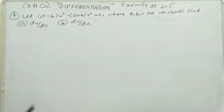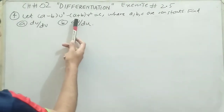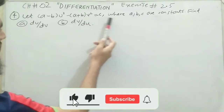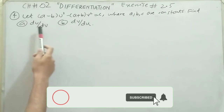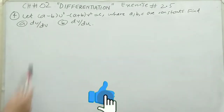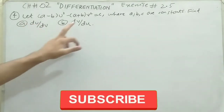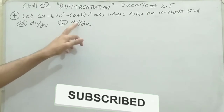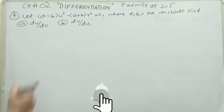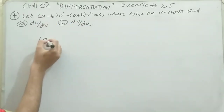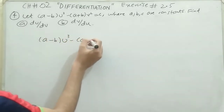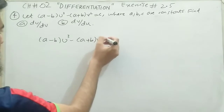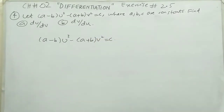Question number four says: let (a minus b) times u cubed minus (a plus b) times v squared equals c, where a, b, and c are constants. Find du/dv and dv/du. Here du/dv means the derivative of u with respect to v, and dv/du means the derivative of v with respect to u. The given equation is: (a minus b) u cubed minus (a plus b) v squared equals c.